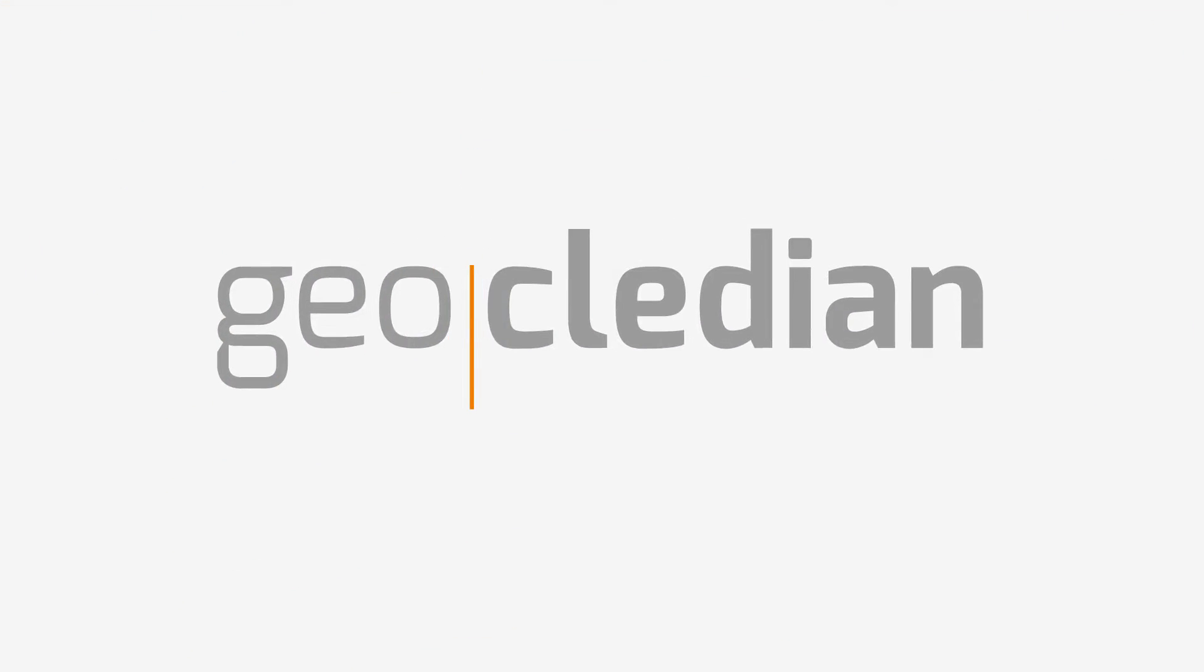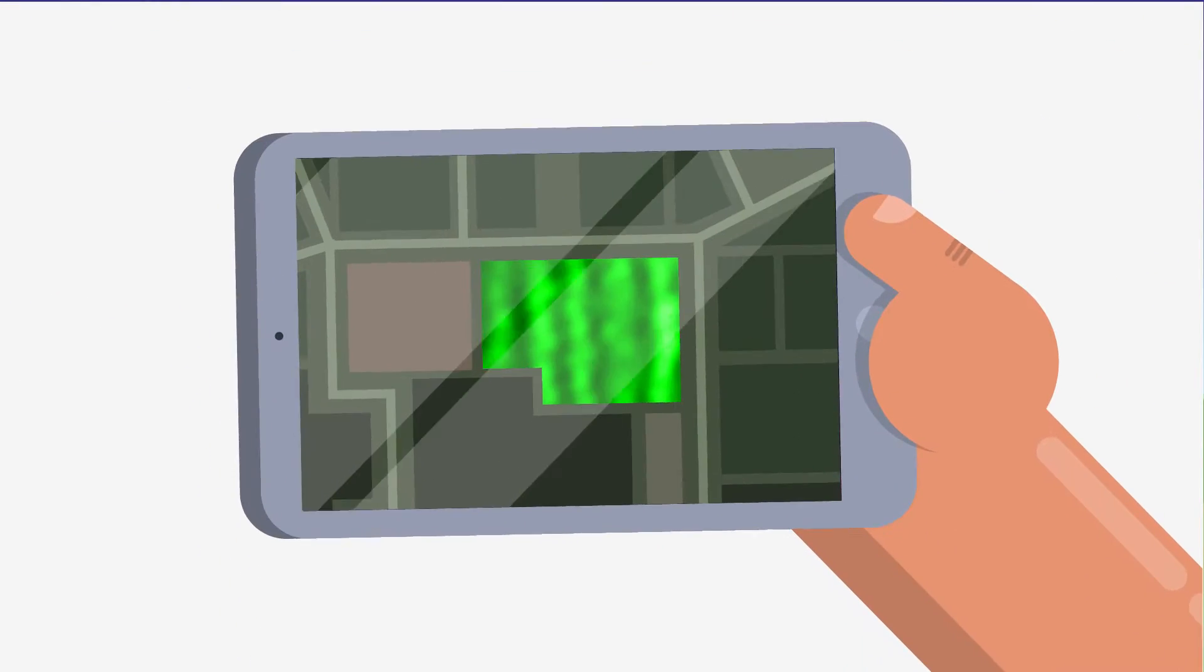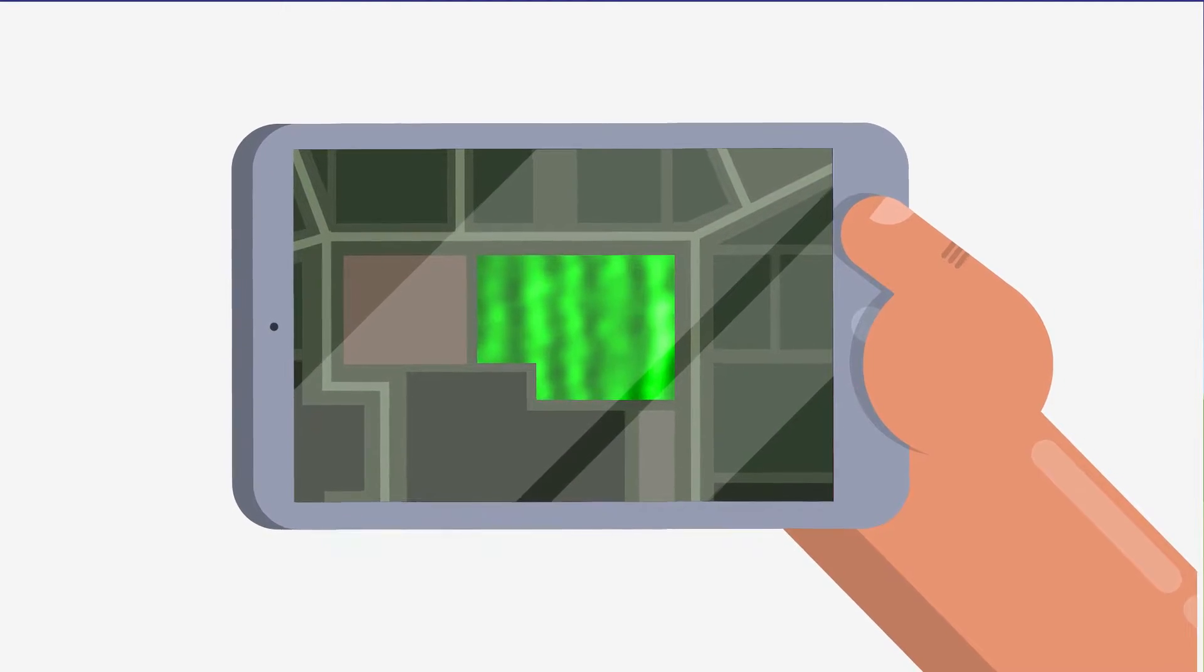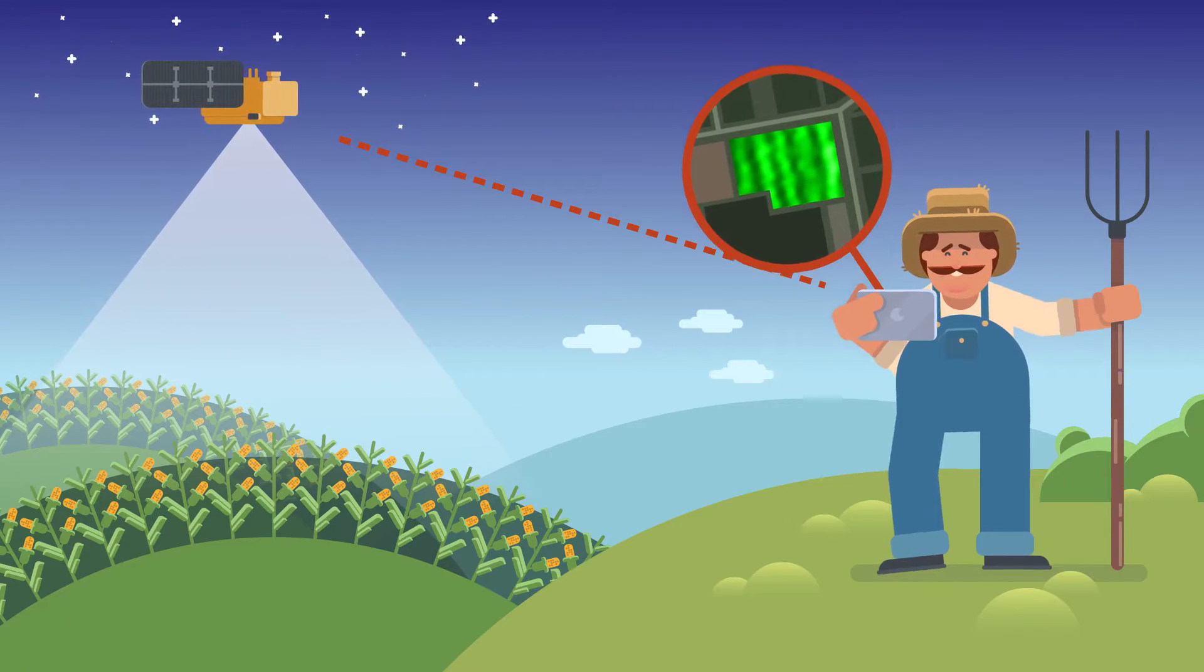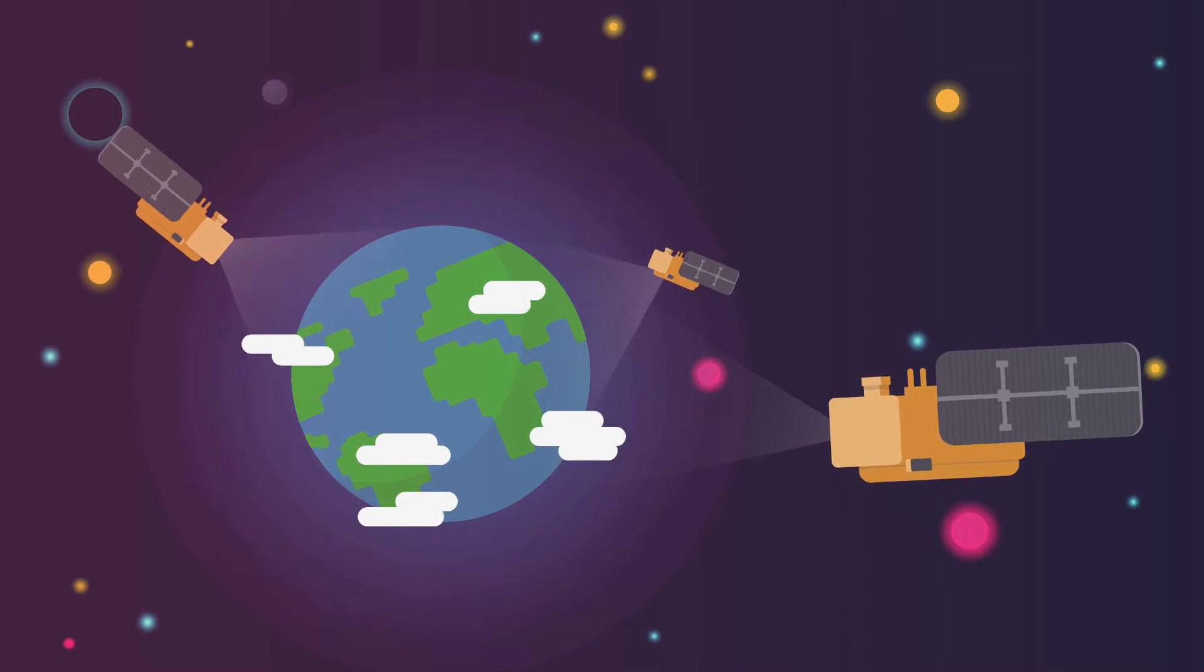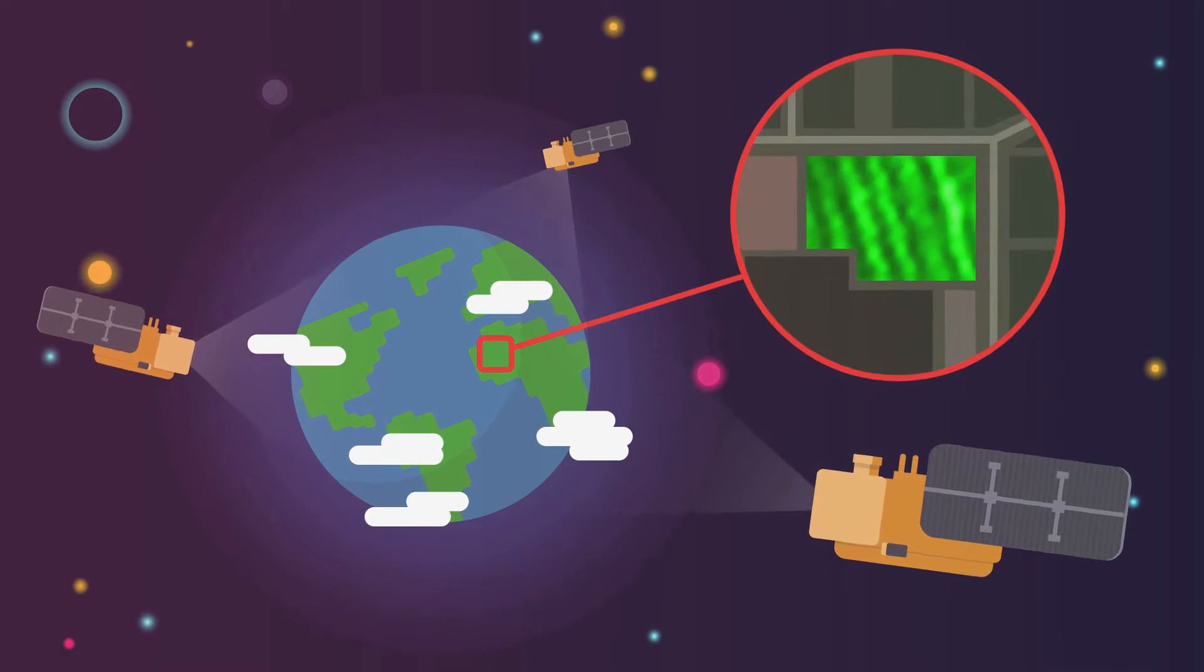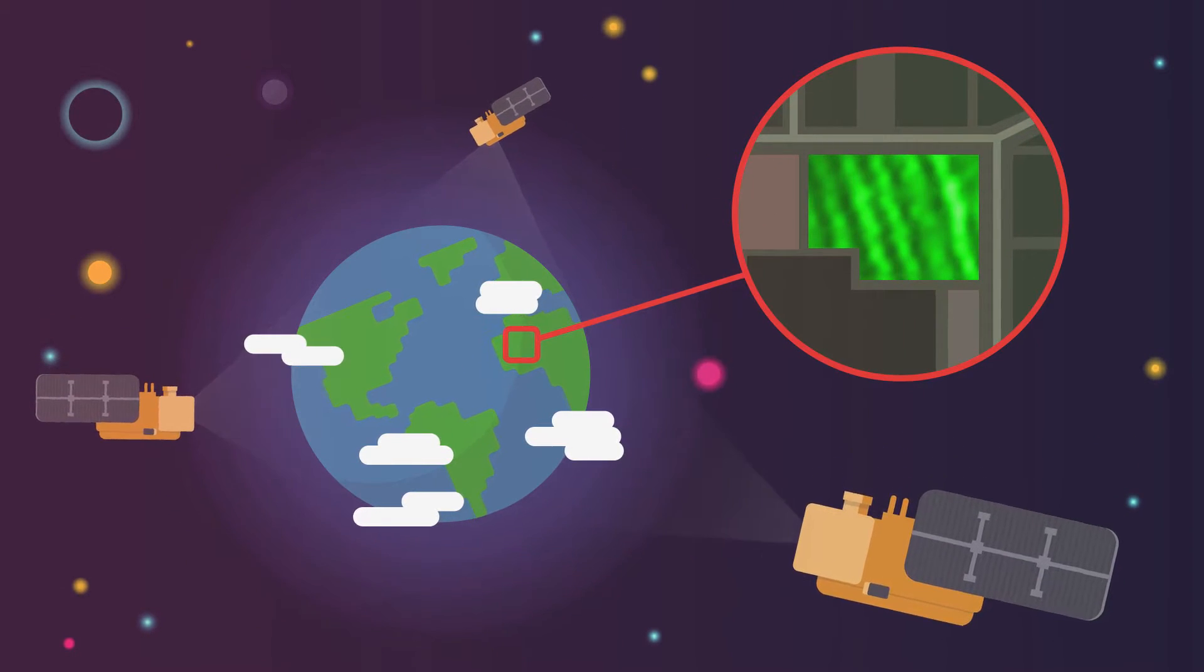Introducing Geoclidean. We convert satellite data into meaningful information and simplify the use of images in your farm management system. Our images are based on the strongest satellite data available. They're provided at a very high resolution and cover any region in the world.